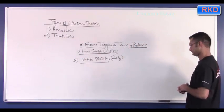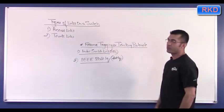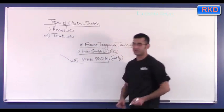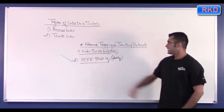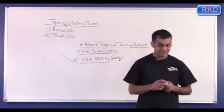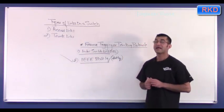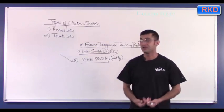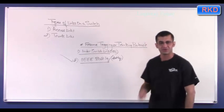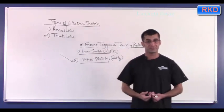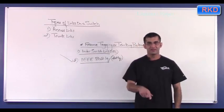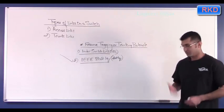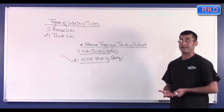Between ISL and .1Q, which one is better? The answer is the one with less overhead. ISL adds a 26-byte header — that's a lot of overhead and more work for the switch to process. A 4-byte tag inserted into the original frame is much easier to process. The sending device adds the tag identifying the VLAN, and the receiving switch reads the tag, determines the frame belongs to, say, VLAN 10, removes the tag, and forwards the frame out to VLAN 10.